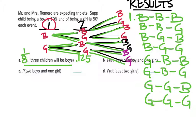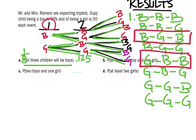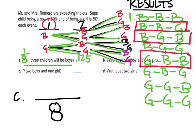What about part C, where there are 2 boys and 1 girl? The order doesn't matter — it's asking where there are 2 boys and 1 girl. Here's one with 2 boys and 1 girl, here's another one, and same here. So for part C, there were 8 possibilities, and 3 of those 8 had 2 boys and 1 girl in no specific order.